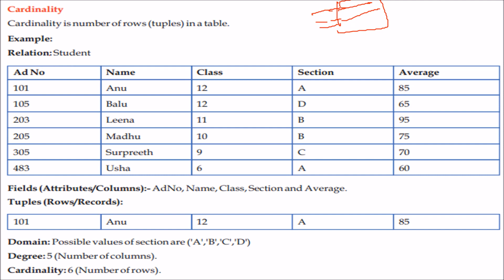Let us understand degree and cardinality using the student table. The student table has columns: admission number, name, class, section, and average — that is 5 columns, so the degree is 5. There are 6 rows, so the cardinality is 6. The domain of the section column is A, B, C, D.